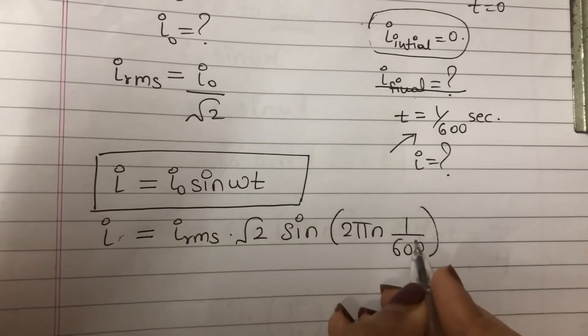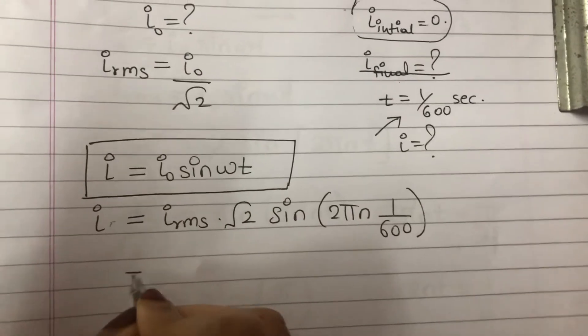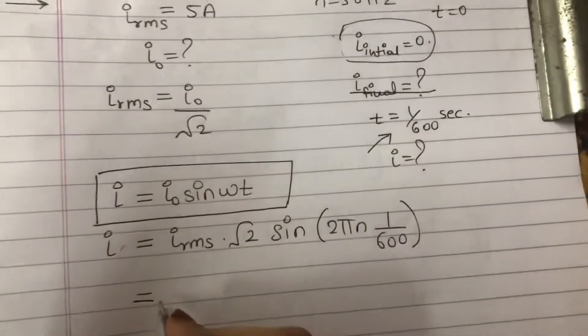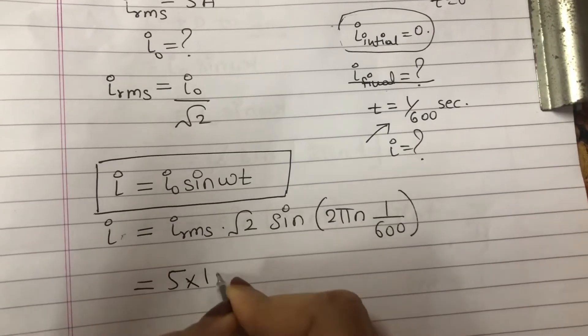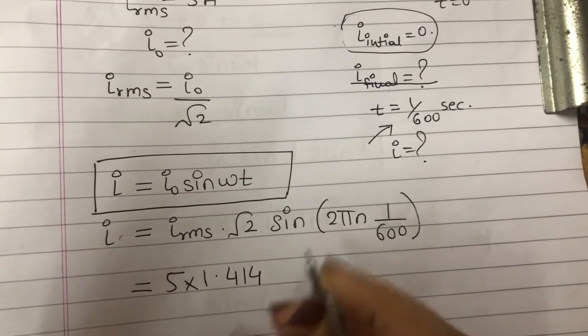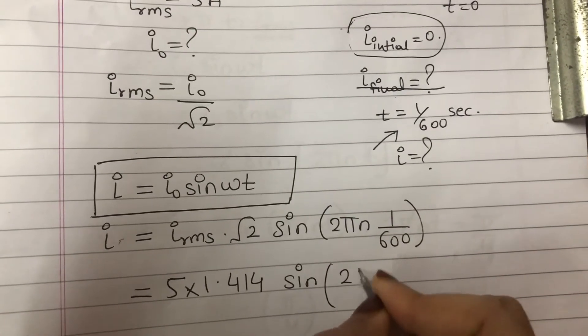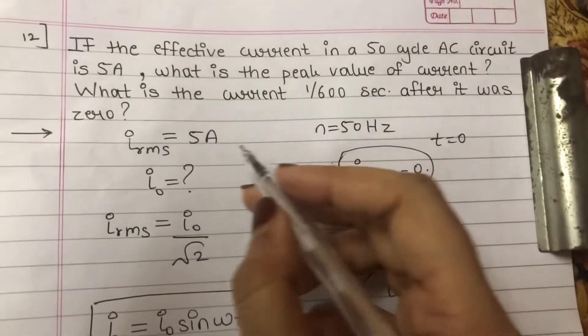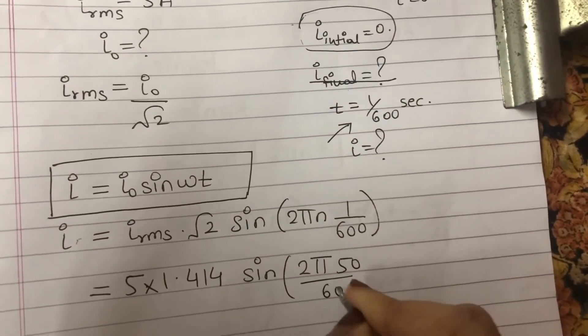This particular instant, at this particular moment, what is the current value? We will find out. I_rms is 5, root 2 is 1.414, sin 2, let pi be as it is, n is 50 upon 600.